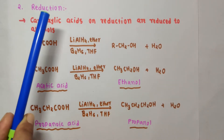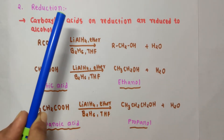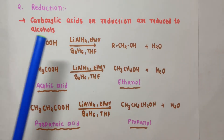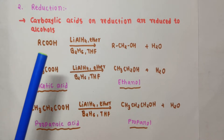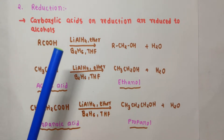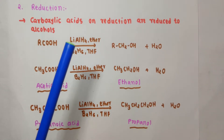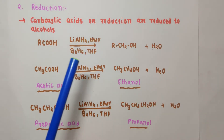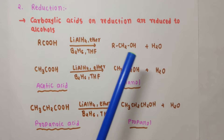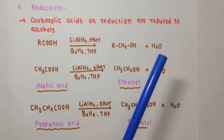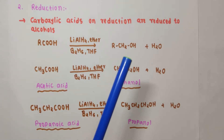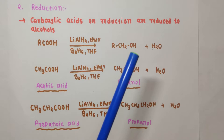Now let us see the next reaction involving the COOH group, which is reduction. Carboxylic acids upon reduction are reduced to alcohols. Using a strong reducing agent such as lithium aluminium hydride (LiAlH4) or diborane, carboxylic acid RCOOH gives a primary alcohol plus a water molecule. So directly from the carboxylic acid group, you get a primary alcohol.